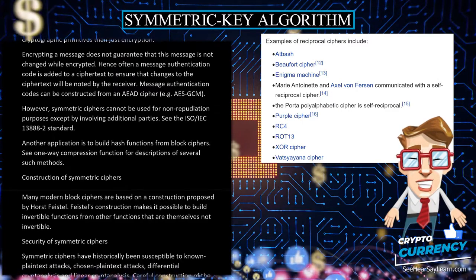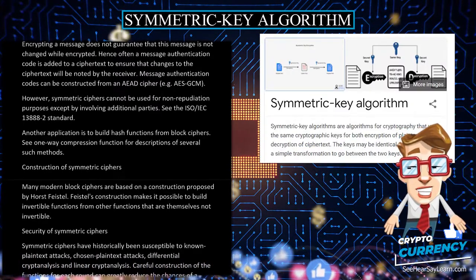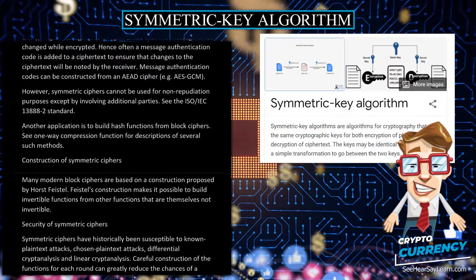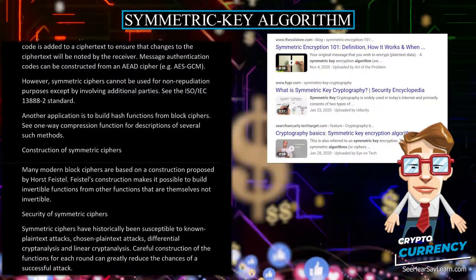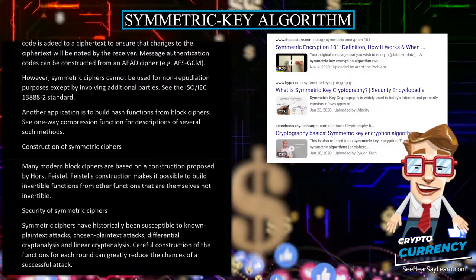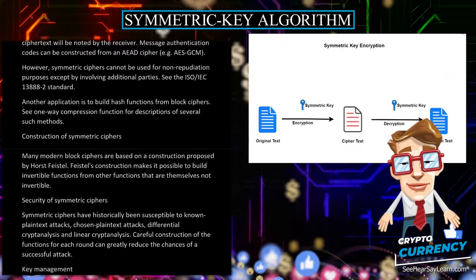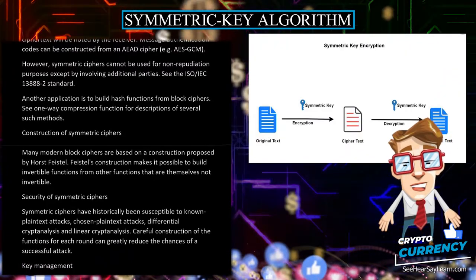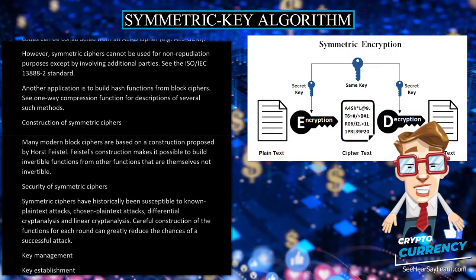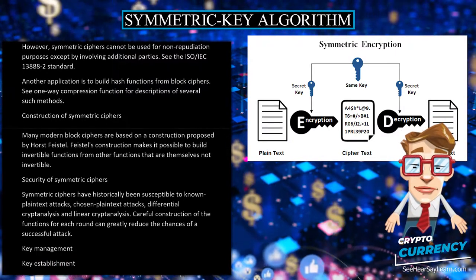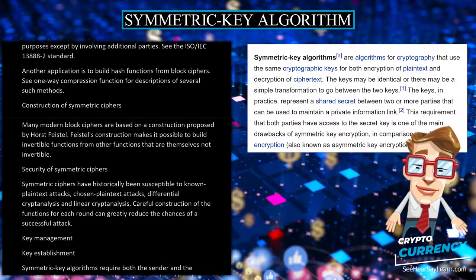However, symmetric ciphers cannot be used for non-repudiation purposes except by involving additional parties. See the ISO IEC 13888-2 standard. Another application is to build hash functions from block ciphers. See one-way compression function for descriptions of several such methods.